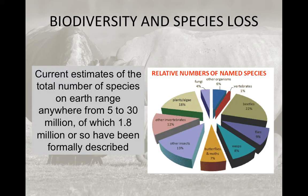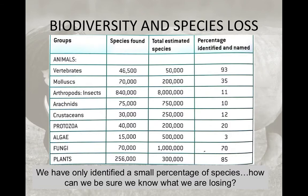Current estimates of the number of species on Earth range from 5 to 30 million — a broad range — and of those only 1.8 million have been formally described. That means we know of perhaps 10 to 20 times fewer species than actually exist. For vertebrates, we've identified about 46,000 and think we're missing about 5,000 — relatively good. But for algae, we have about 15,000 on record while an estimated 500,000 exist, leaving us short by about 485,000, or roughly 97%. So how can we even be sure of what we are losing?